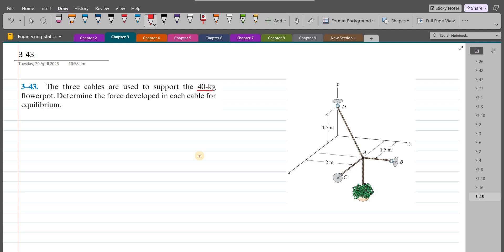Now to solve this problem, first of all, we have to express each force in terms of Cartesian vector form. So we have the force in cable AB, the force in cable AD, the force in cable AC, and also the weight force of this flower pot.